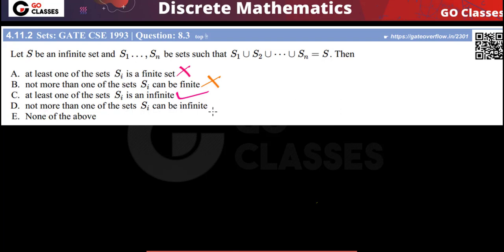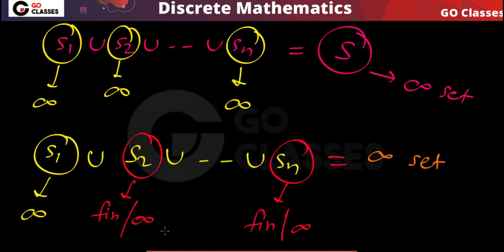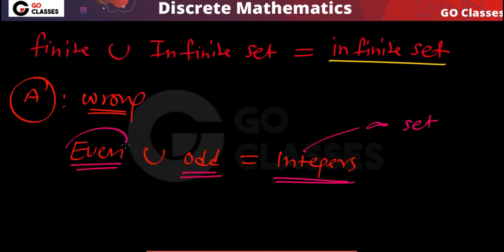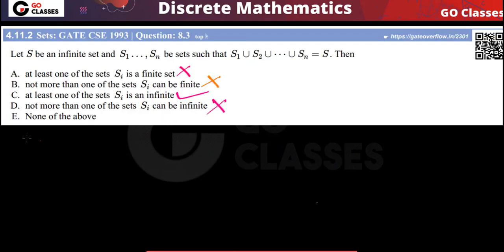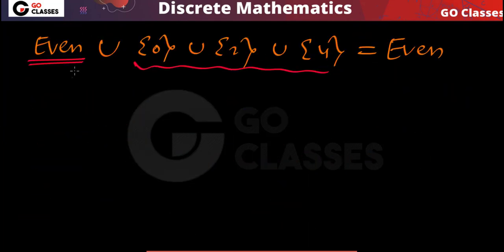Option D says not more than one can be infinite — this is also wrong. More than one can be infinite; in fact, all of them can be infinite. For example, two infinite sets unioned together is still infinite. But at least one of them must be infinite.